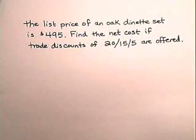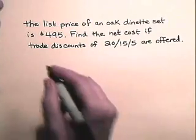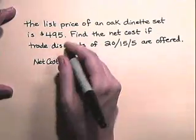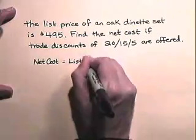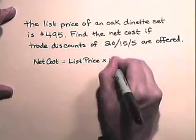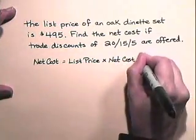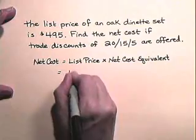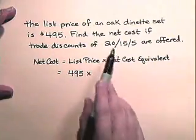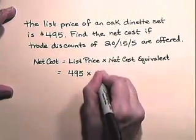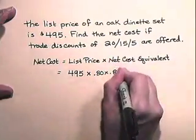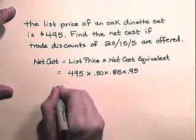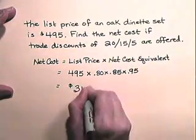Let's look at an example of finding the net cost. The list price of an oak dinette set is $495. Find the net cost if trade discounts of 20-15-5 are offered. Net cost is always equal to list price times net cost equivalent. So the net cost will be $495 multiplied by the net cost equivalent. The complement of 20% is 80%, the complement of 15% is 85%, and the complement of 5% is 95%. So the net cost here will be $319.77.